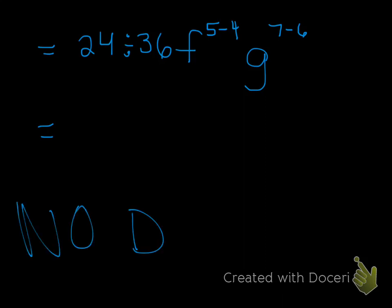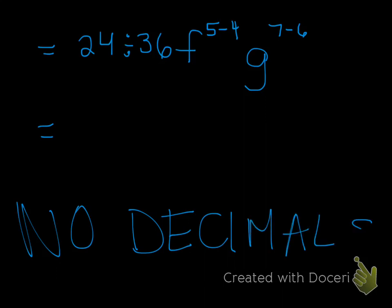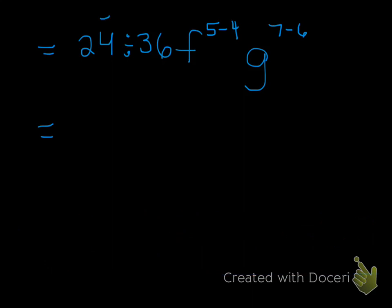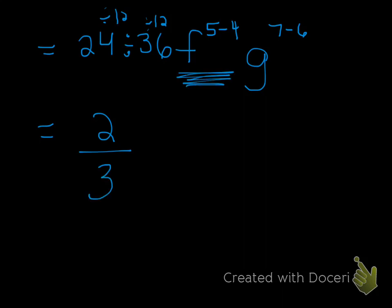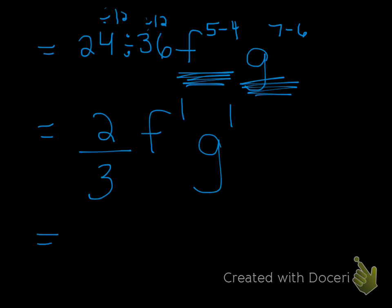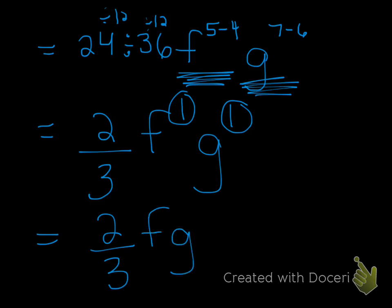Now you'll notice that when you divide 24 by 36, you get a decimal — and I don't want decimals. You have to reduce. So in order to reduce, I divide both the top and the bottom. I think 12 is my greatest common factor. 24 divided by 12 is 2, and 36 divided by 12 is 3. I evaluate for f — f to the power of 1 — and then for g — g to the power of 1. I simplify this expression so that you don't lose communication marks; the exponent 1s are not necessary, so we just rewrite the answer without the exponents.